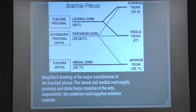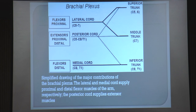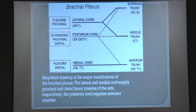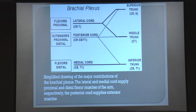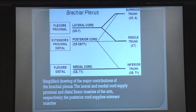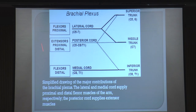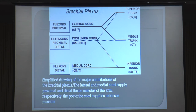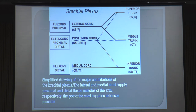This is a very simplified diagram showing the contribution of the three cords. The lateral cord gets contribution from the superior trunk and the middle trunk. The posterior cord from all three trunks. And the medial cord from the inferior trunk. The lateral cord mainly supplies the proximal flexors - elbow flexion and wrist flexion - mainly supplied by the lateral cord, because of the musculocutaneous and the lateral part of the median nerve. The median nerve gets contribution from the lateral cord and also from the medial cord. So the lateral part of the median nerve causes wrist flexion.